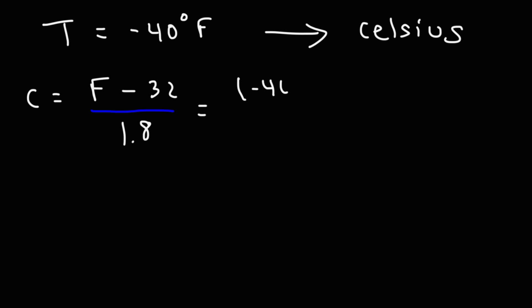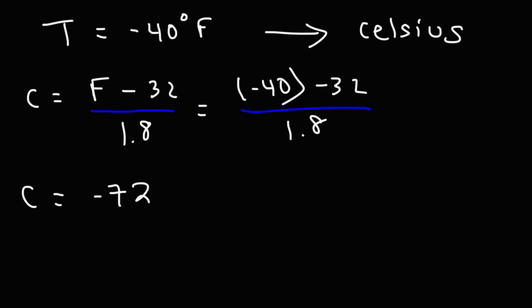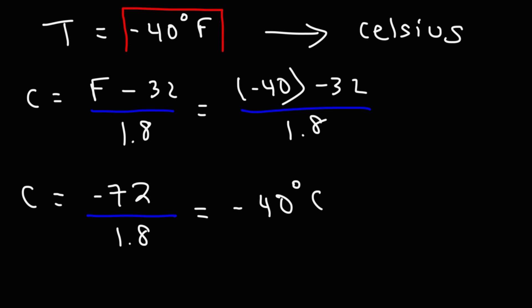So let's replace F with negative 40. Negative 40 minus 32 — negative 4 minus 3 is negative 7, 0 minus 2 is negative 2, so this is going to be negative 72. Negative 72 divided by 1.8 gives us negative 40. So at negative 40 degrees, the Fahrenheit temperature is exactly the same as the Celsius temperature. That's the one value where these two scales are the same.